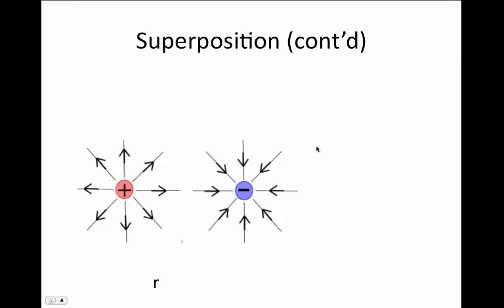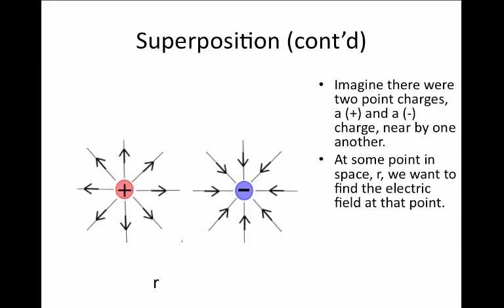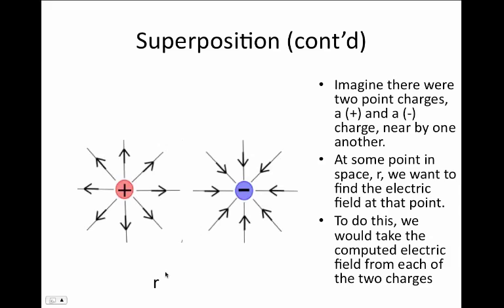Let us consider a simple example of two charges — a positive and a negative — located nearby one another, and ask: what is the net electric field from the superposition of these two charges? We'll imagine one positive and one negative. We can consider some point in space, for example down here and to the left. To compute the net electric field, we would compute at this location R the electric field individually from the positive charge and the negative charge.